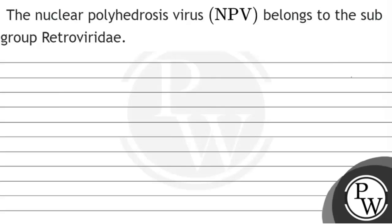Hello children. Let's read the question. The question is: the nuclear polyhedrosis virus NPV belongs to the subgroup Retroviridae. In this question we have to tell that the given statement is true or false.